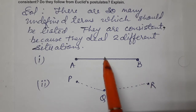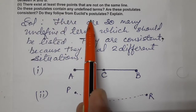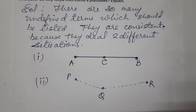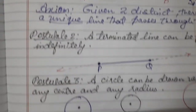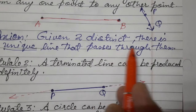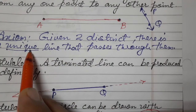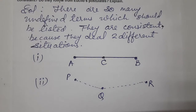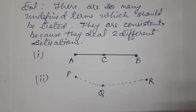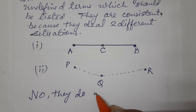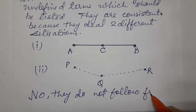Now, do they follow from Euclid's postulates? We come to know that these do not follow from Euclid's postulates, but they deal with Euclid's axiom. The axiom we know is: given two distinct points, there is a unique line that passes through them. So it can follow from the axiom, but not from Euclid's postulates. The answer is: no, they do not follow from Euclid's postulates.